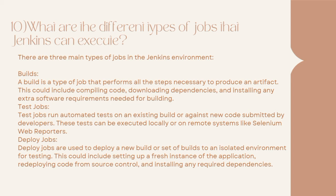Question 10: What are the different types of jobs that Jenkins can execute? There are three main types of jobs in the Jenkins environment. First, Builds — a build is a type of job that performs all the steps necessary to produce an artifact. This could include compiling code, downloading dependencies, and installing any extra software requirements needed for building.